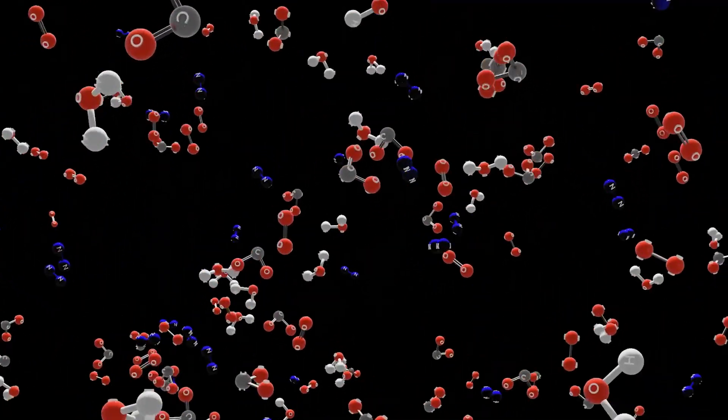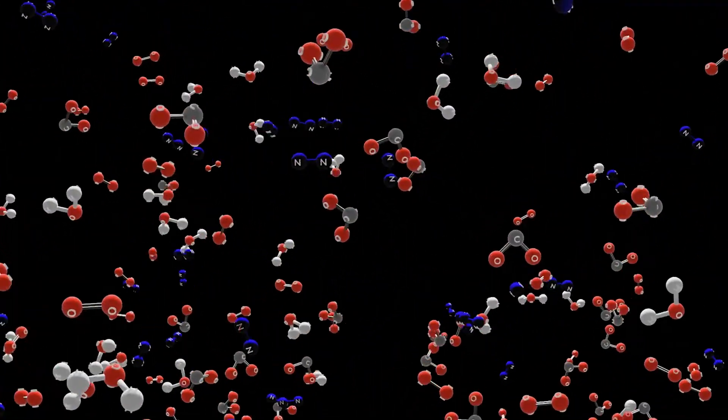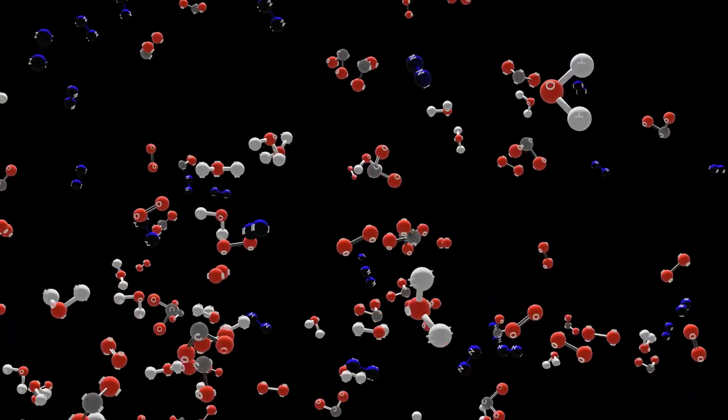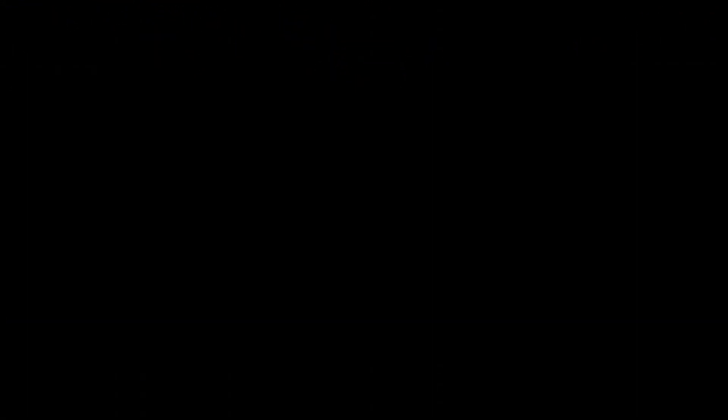Although the air molecules are always bumping off each other, the water molecules found in the air are a little different. If we look closely at a single water molecule, we would see a single water molecule is made up of a single oxygen and two hydrogen atoms linked together through covalent bonds.